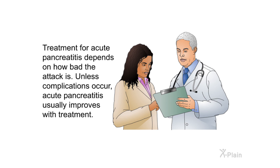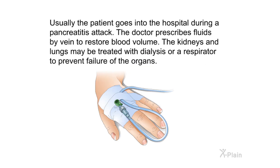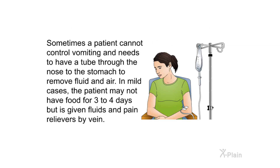Treatment for acute pancreatitis depends on how bad the attack is. Unless complications occur, acute pancreatitis usually improves with treatment. The patient typically goes into the hospital, where the doctor prescribes fluids by vein to restore blood volume. The kidneys and lungs may be treated with dialysis or a respirator to prevent organ failure. Sometimes a tube is placed through the nose to the stomach to remove fluid and air. In mild cases, the patient may not have food for three to four days but is given fluids and pain relievers by vein.